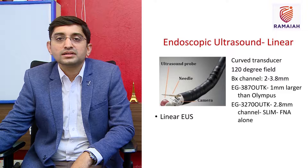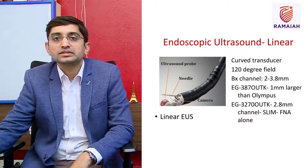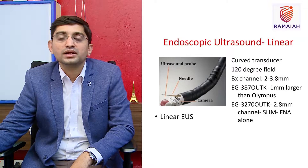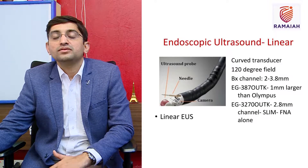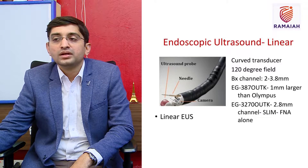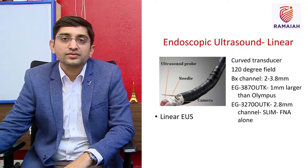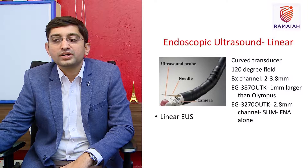A linear echo endoscope has a convex array at the tip, giving a picture similar to an ultrasound image. A radial echo endoscope provides a sector-based picture similar to computed tomography. The advantage of the linear echo endoscope is its curved transducer, which gives a 120-degree field of vision.